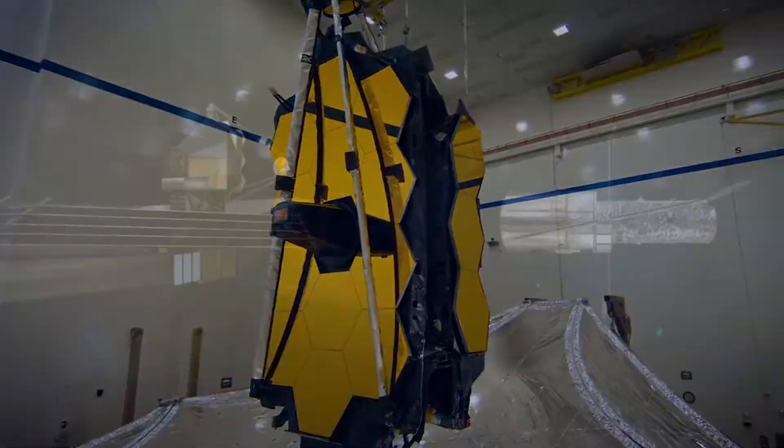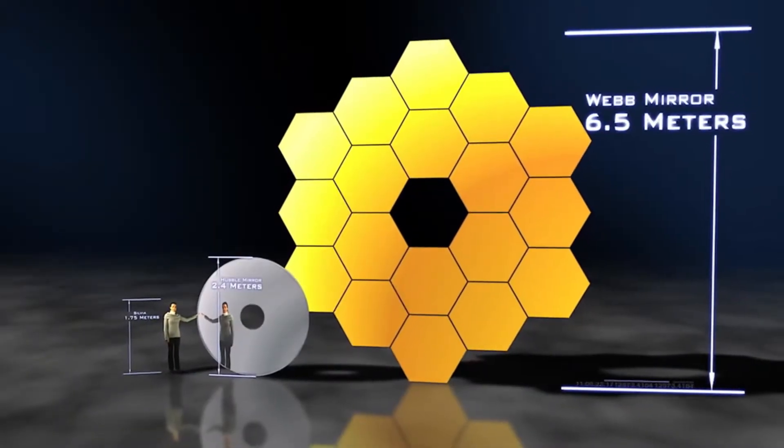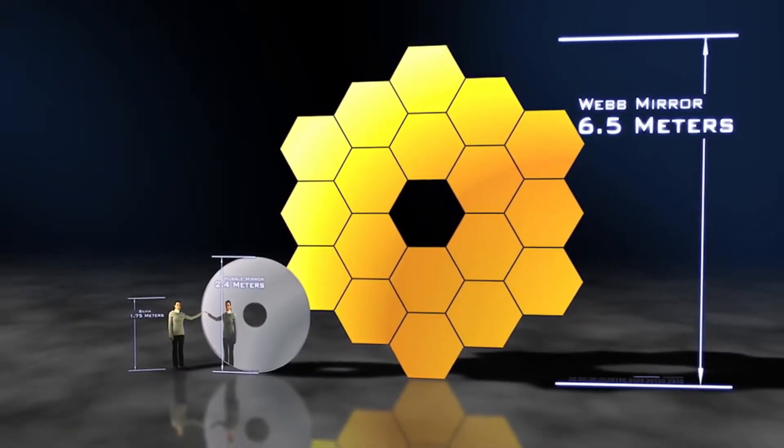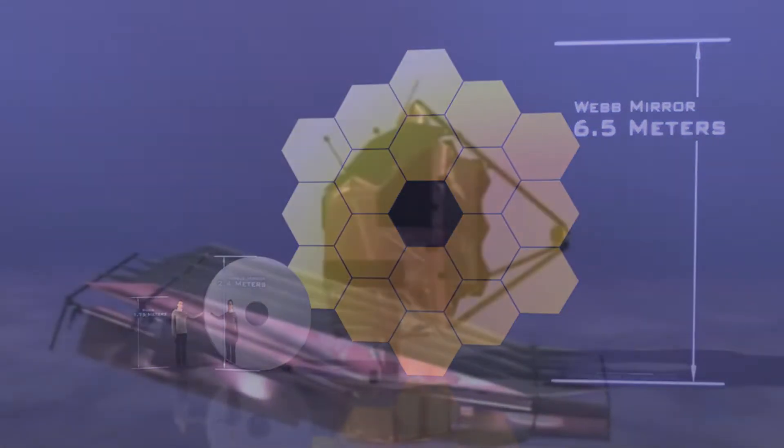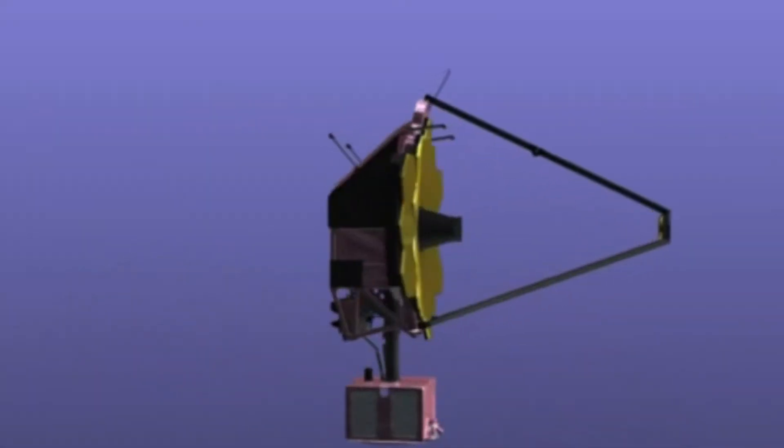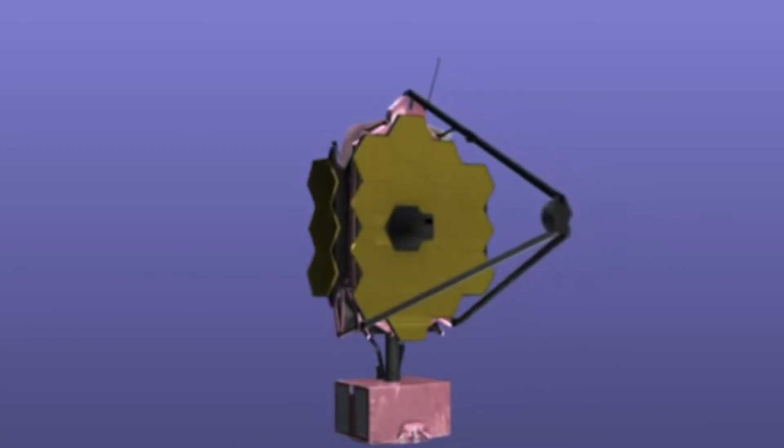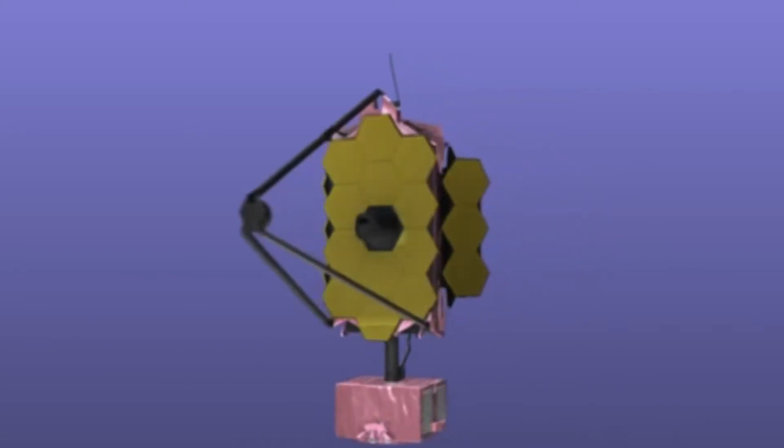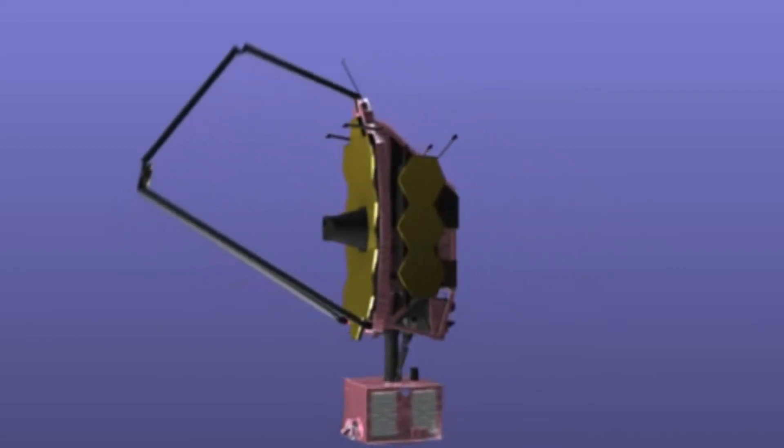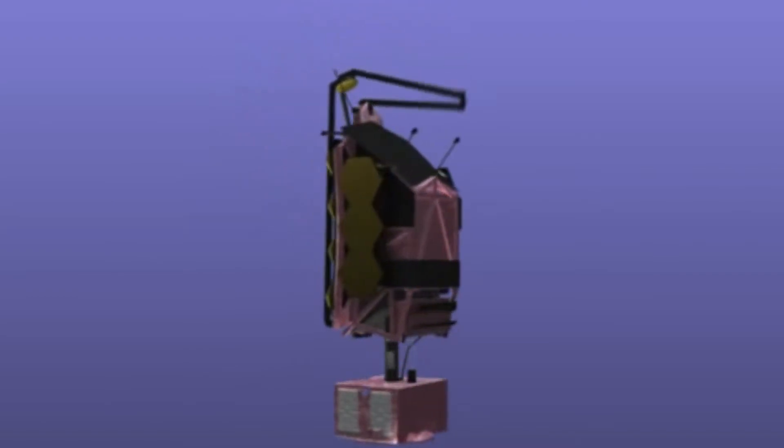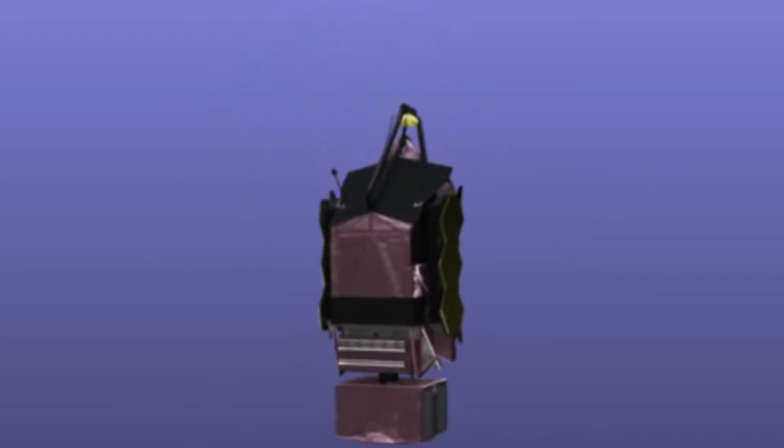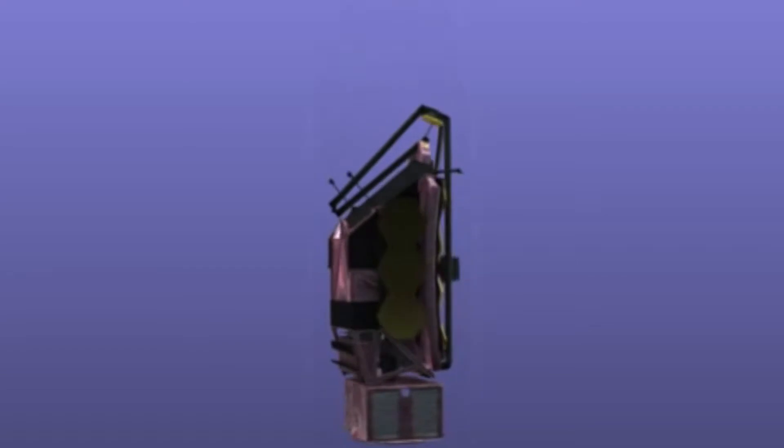Webb's mirror is the largest of its kind ever created by NASA. But in the unfolded state, it couldn't fit inside the rocket. Webb is a collection of moving parts that have been specifically designed to fit into compact formation, allowing it to fit in a five-meter payload fairing.